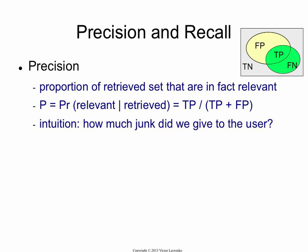Precision — this is not average precision, which we had in the coursework run — the basic precision is: out of the retrieved set that you have, the entire yellow set, what proportion of it was relevant to the information need. So it's the probability that a document is relevant, given that it was retrieved by your system. That's the number of true positives divided by the total size of the retrieved set, which is true positives plus false positives. The intuition for precision is: you're giving the user a set — how much junk are you giving them in that set?